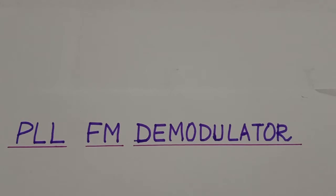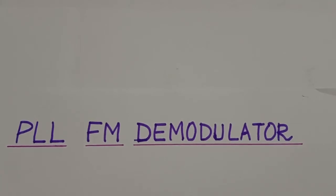Hello everyone. In today's lecture we shall discuss the working of PLL FM demodulators. PLL demodulators are found in many types of radio equipment, ranging from broadcast receivers to high-performance communication equipment. PLL could easily be integrated into the radio IC by simply adding a little extra circuitry, and it eliminates the costly RF transformers needed for circuits like the Foster-Seeley discriminator or the ratio detectors.